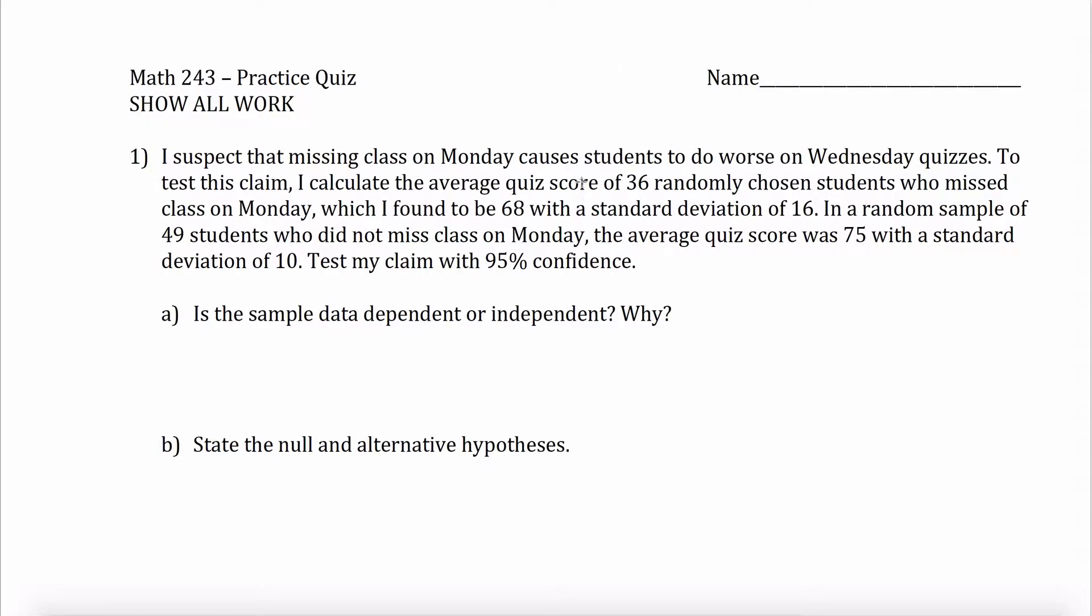Alright, here are solutions to the Thanksgiving worksheet or practice quiz for Math 243. The idea here is we're moving into Chapter 11 where we talk about two-sample hypothesis testing. The big thing to look at is we have one example where we have dependent data and one example where we have independent data. So you have two different samples, and the question is, did the observations on that second sample depend upon the observations in the first sample or not?